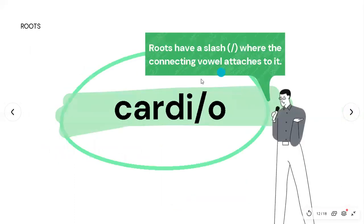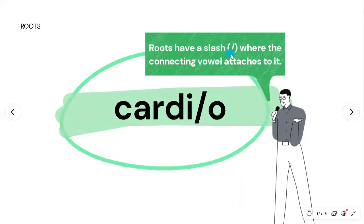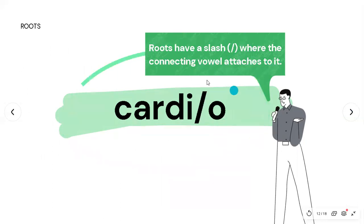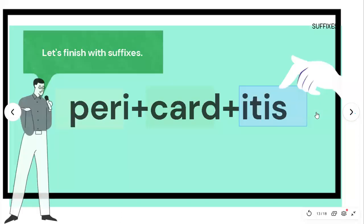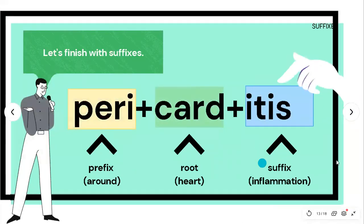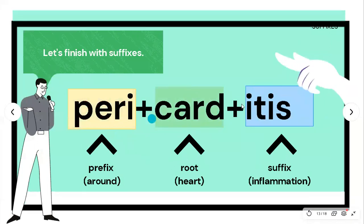Roots are also written with a slash, showing where the combining vowel attaches. So the root is 'cardi,' the combining form is written 'cardi/o,' and the combined form is 'cardio.'